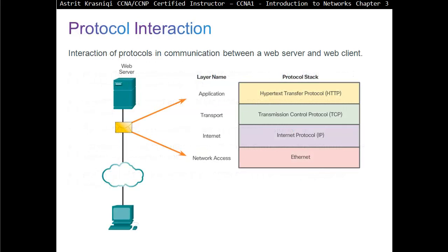Let's look at interaction between a web server and web client. The communication starts at the source and goes to the destination. The message is something like 'get me a website or web page.' The application layer is going to identify that message — this is a web page the user is trying to access.